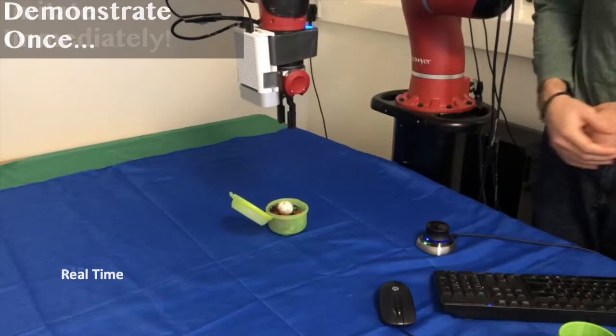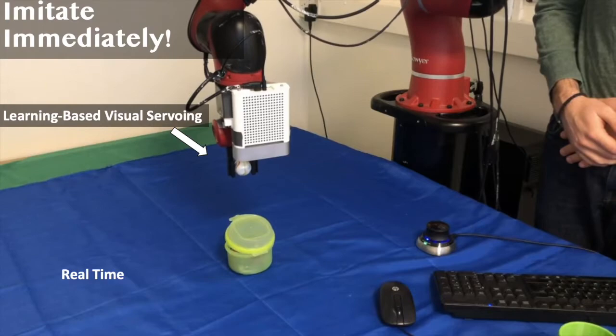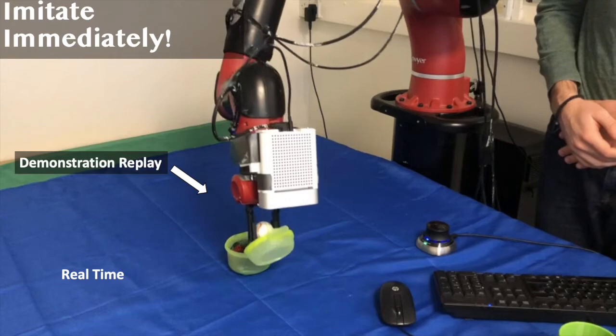Once done, we are ready to deploy our controller. We use a simulation-trained visual servoing controller to go back to the bottleneck pose, from which point the end effector velocities can simply be replayed to complete the task.